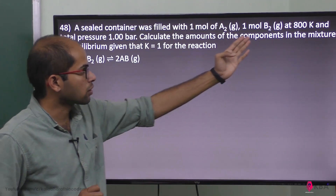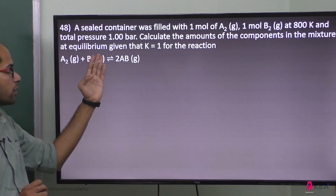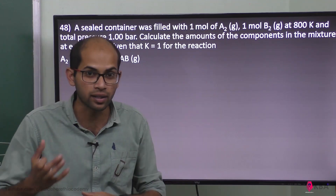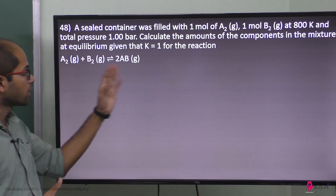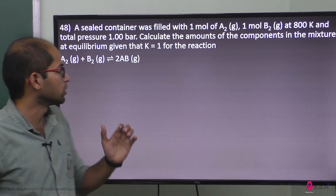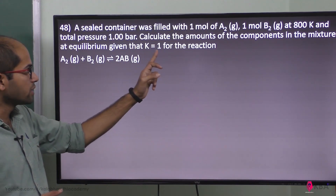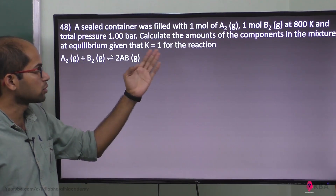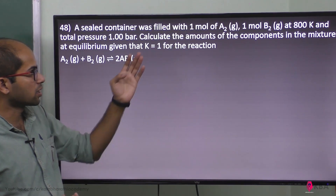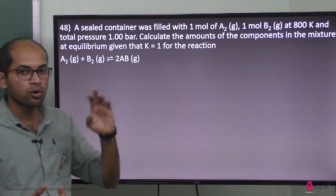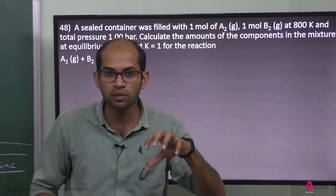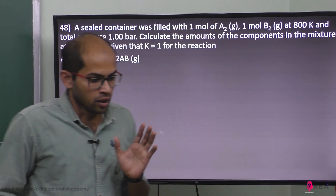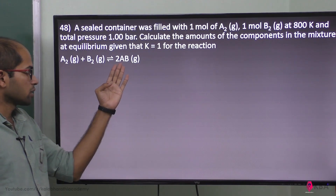Calculate the amount of the components in the mixture at equilibrium — A₂ and B₂. Given that K is equal to 1 for the reaction: A₂ + B₂ gives 2AB.